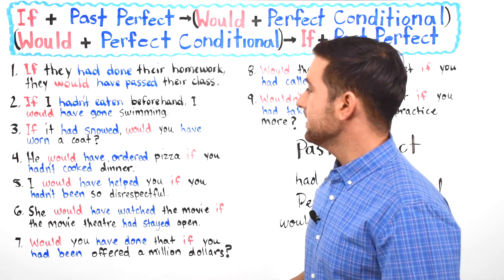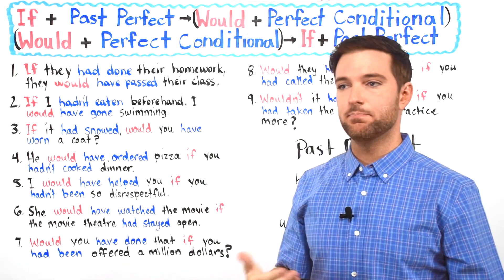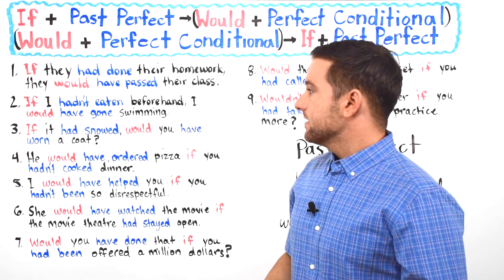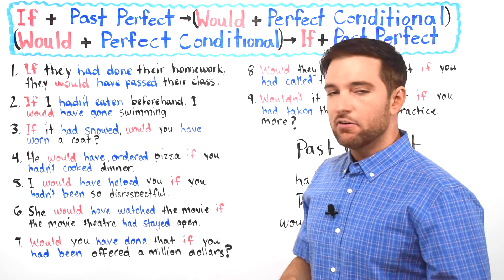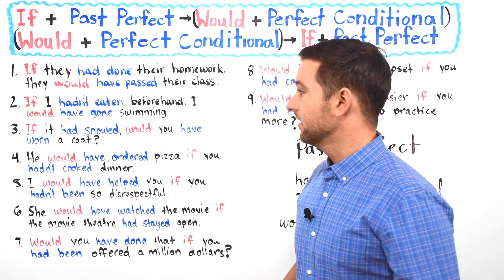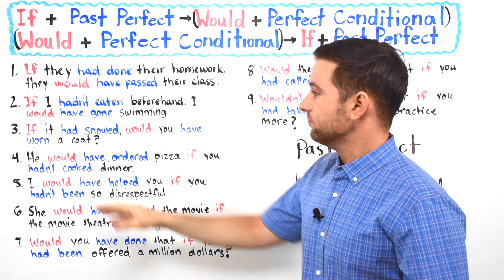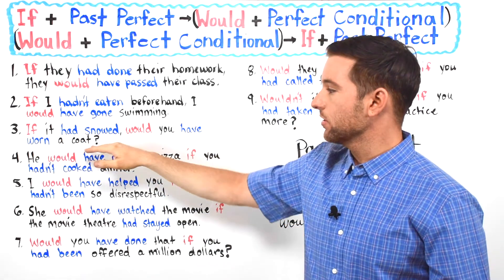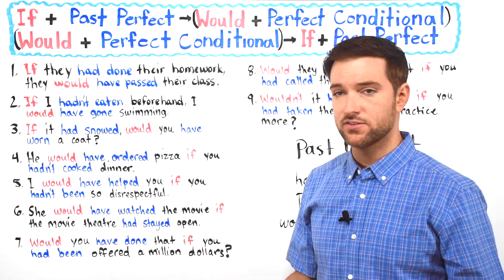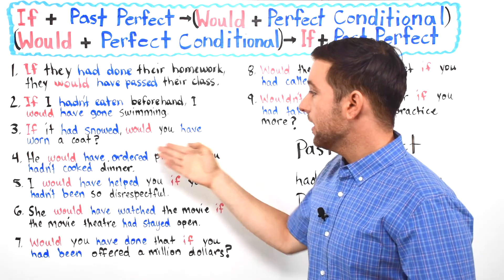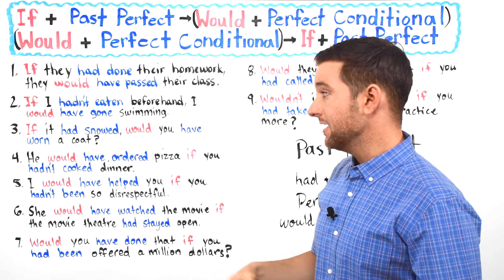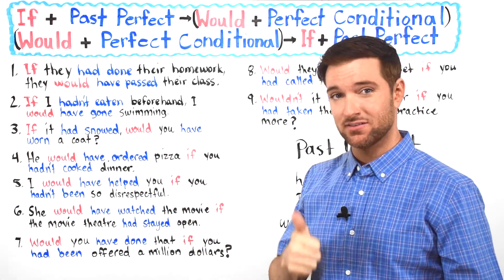Number two: 'If I hadn't eaten beforehand, I would have gone swimming.' 'Beforehand' means prior to doing something else. Maybe you ate dinner, and you know how you have to wait maybe 40, 50, 60 minutes before going into the pool — then I would have gone swimming. Number three: 'If it had snowed, would you have worn a coat?' You can also use this with questions. Hypothetically, if there was snow in winter, would you have worn a coat? The answer is probably yes: 'If it had snowed, I would have worn a coat.'